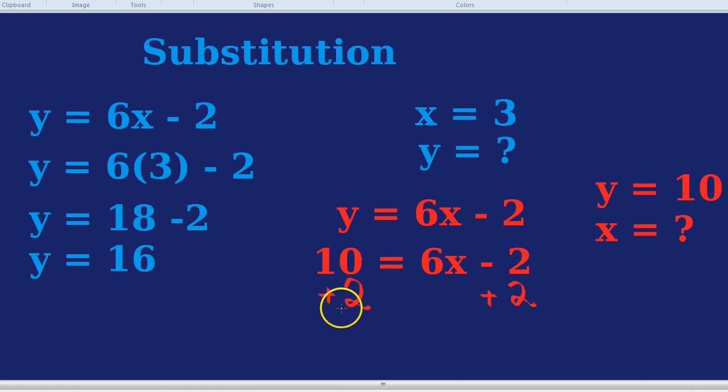Notice also how I write the plus 2 underneath the numbers, not underneath the letter. Letters and numbers are in completely different categories. So when we're adding 2, we're only adding 2 to the minus 2 and the 10, not to the 6x. We wouldn't get 8x. They're a separate category.